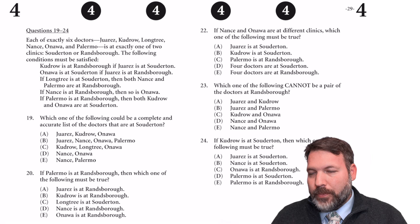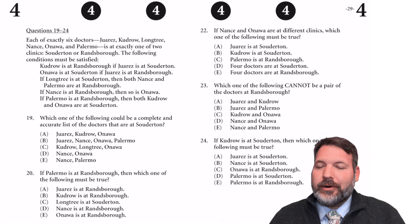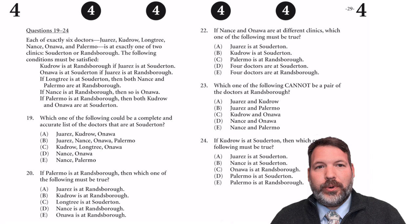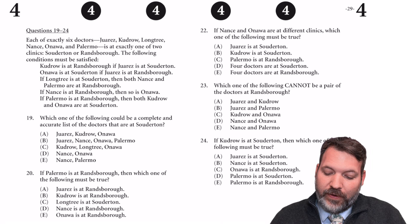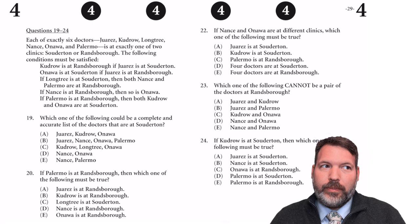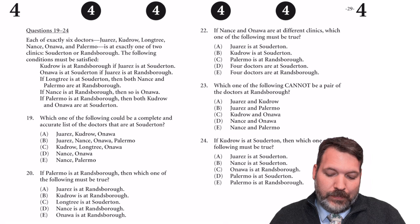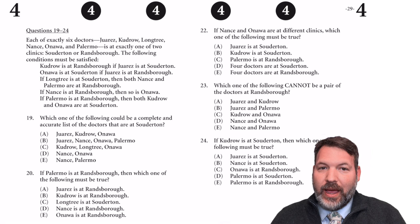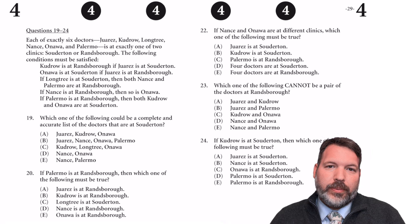We'll need to decide how to symbolize clues and build the diagram since it's not the classic in-or-out structure. What I'm more interested in are the conditional clues — the if-then statements. We want to symbolize them simply. For example, the third clue: 'if Longtree is at Souderton then both Nance and Palermo are at Randsboro.' How do we symbolize a 'both...and' and keep it simple? It happens again in the last clue.